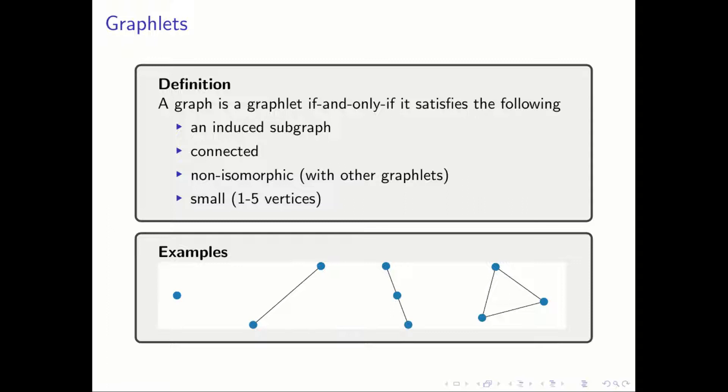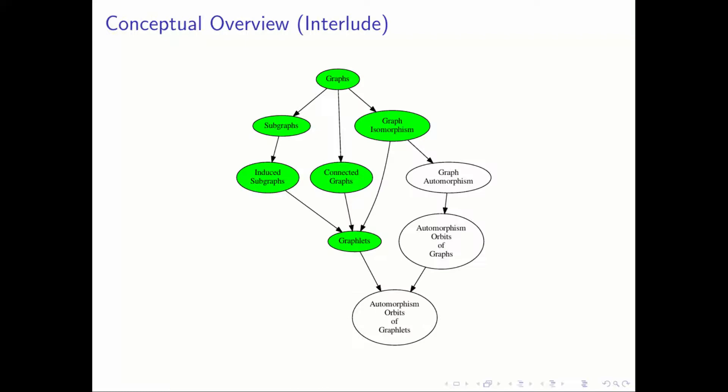We are now ready to define the concept of a graphlet. A graphlet is a graph that is small, connected, as well as an induced subgraph, and they are considered distinct from each other when they are non-isomorphic. From left to right, the examples here are the singlet, barbell, wedge, and triangle graphlets.